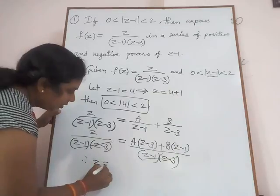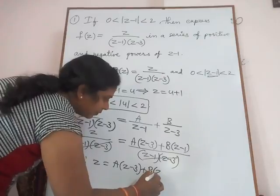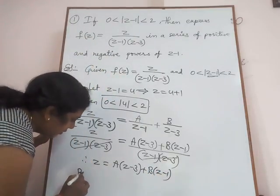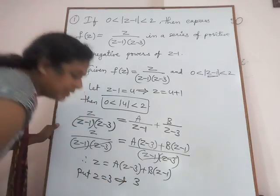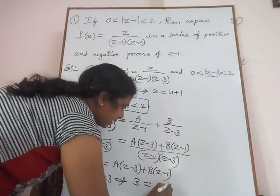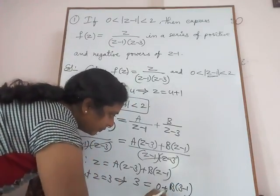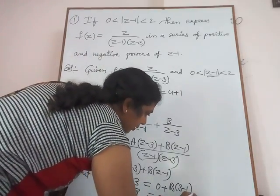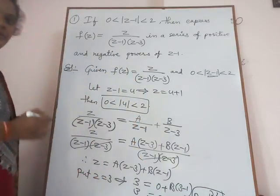Therefore z = A(z-3) + B(z-1). Put z = 3: then 3 = 0 + B(3-1) = 2B. From this, B = 3/2.